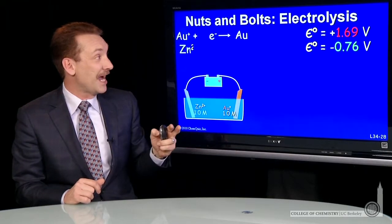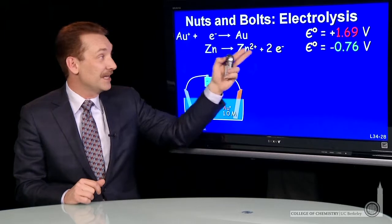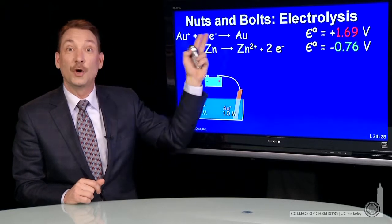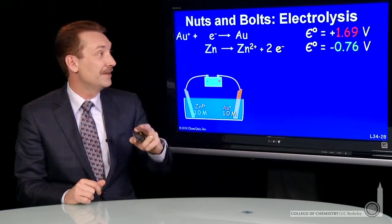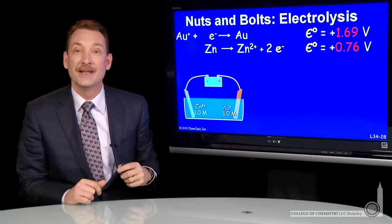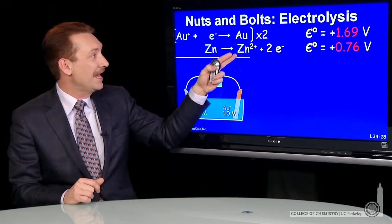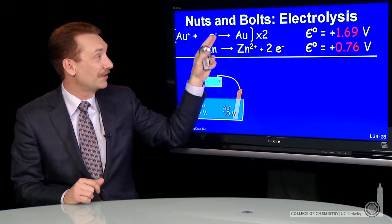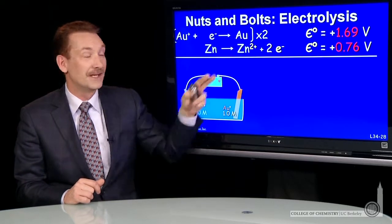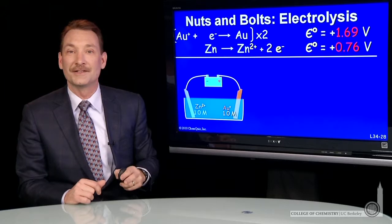Of course, in the electrolytic reaction, zinc will be oxidized while gold is reduced. So I'll reverse the zinc reaction and change the sign of the potential. I can then add these if I keep track of the number of electrons. So two electrons here and two electrons here. That gives me a two electron transfer process with a total voltage of the sum of 1.69 and 0.76 volts.